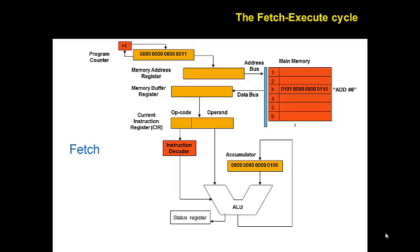To get started, the first part of the cycle is the fetch phase. Essentially what we're trying to do is get the contents from main memory to the CPU. To begin with, the program counter contains the address of the next instruction to be fetched from memory. This is copied to the memory address register and now a read cycle will be performed.